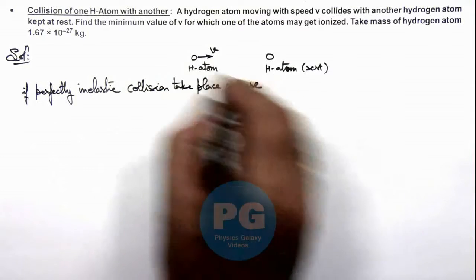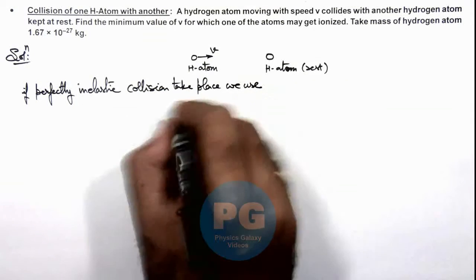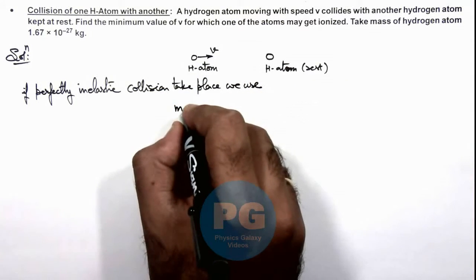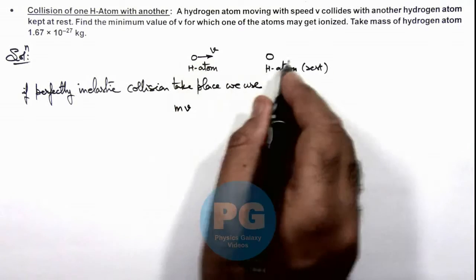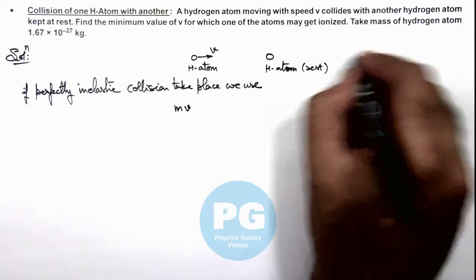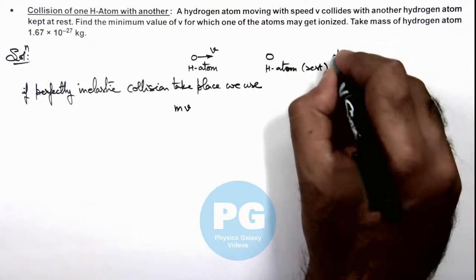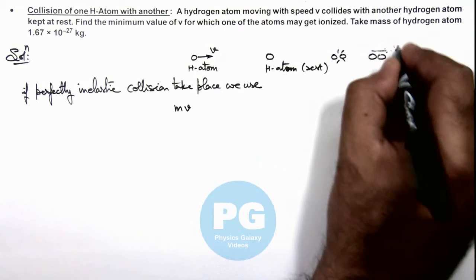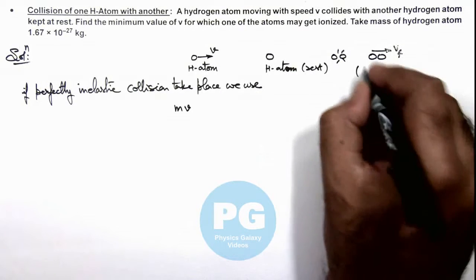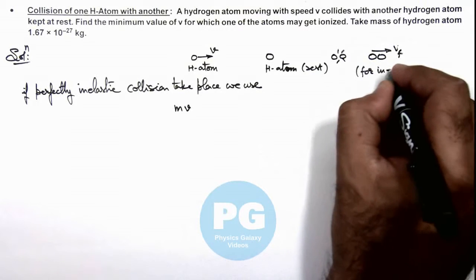we use initial momentum is mv, if m is considered to be the mass of hydrogen atom. After collision then both would be moving. Here the collision occurs and finally the two are moving with the common speed vf. This is for inelastic collision.